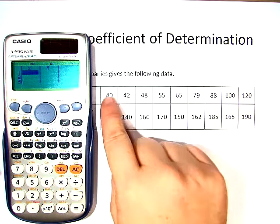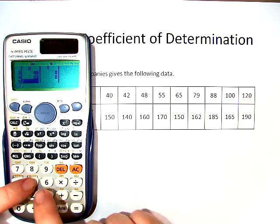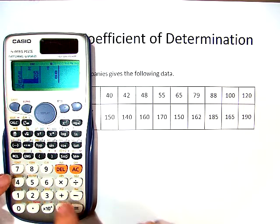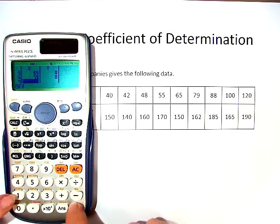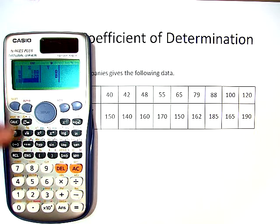Our x's go first, 40, 42, 48, 55, 65, 79, 88, 100, and 120. To get back up to the top, you hit the down button.